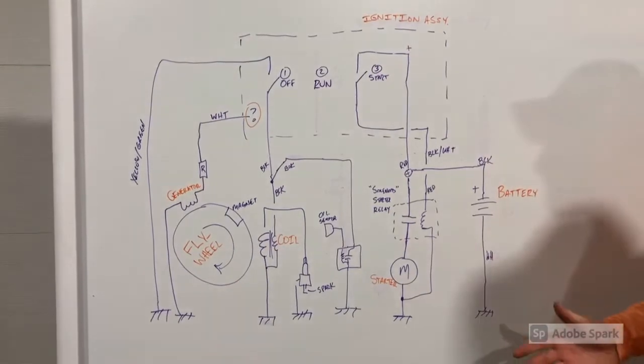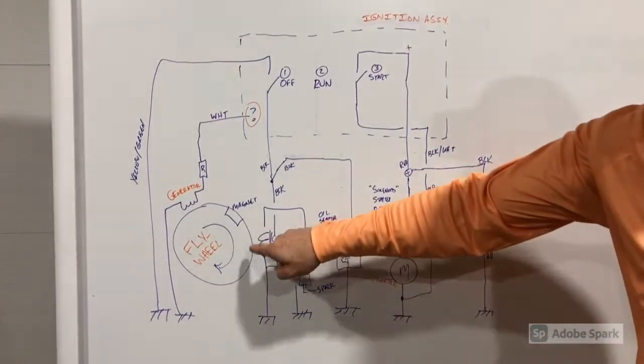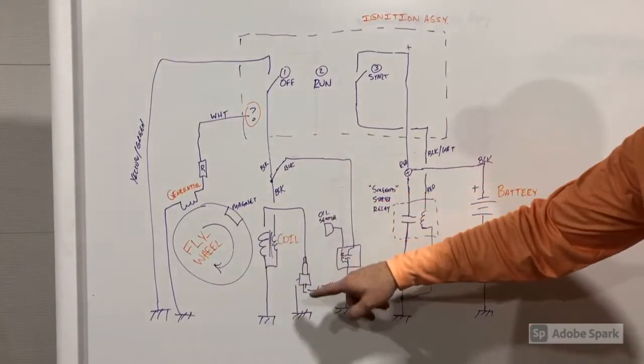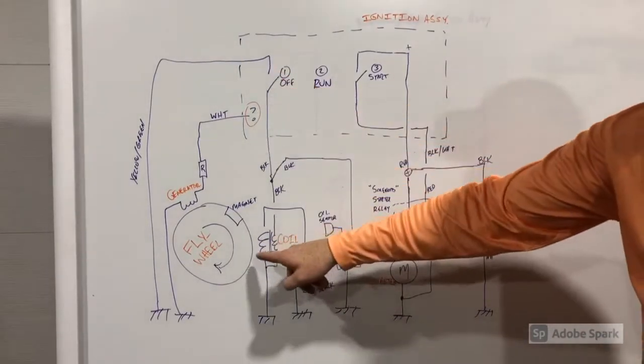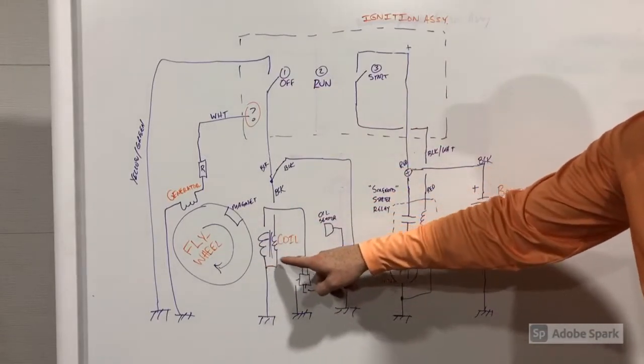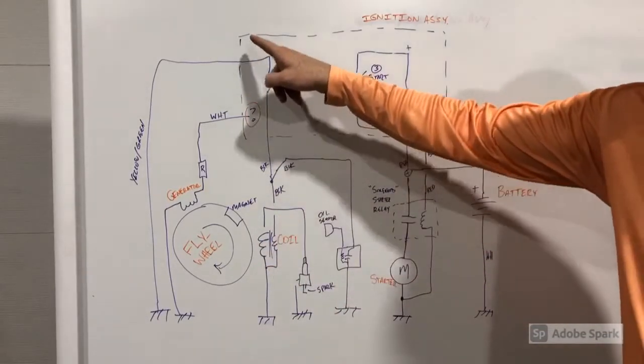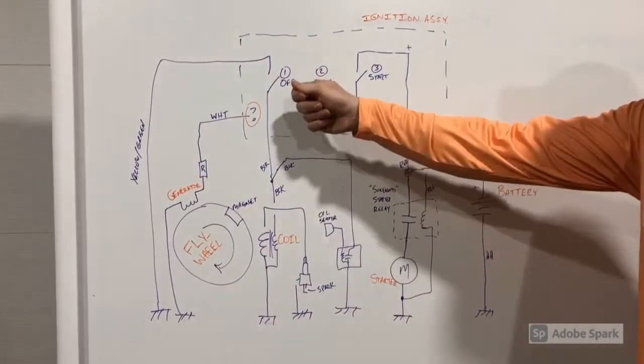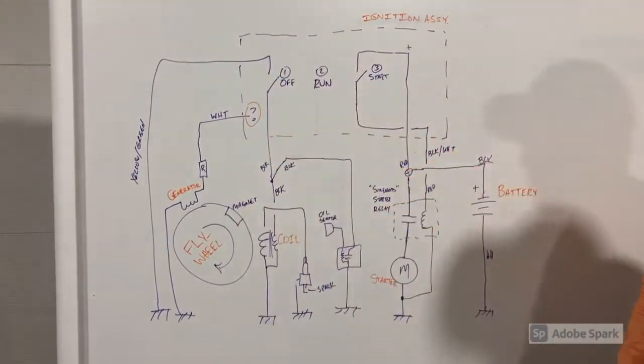So when you turn that key from the home or run position to off, you close a circuit, which allows power to bypass the coil and go straight to ground. And when you take power to ground, it stops the engine. So how does that stop the engine? Basically, while this flywheel is generating power through the coil, which keeps this spark going, when you close this circuit and that flywheel is trying to give power to the spark plug, it actually bypasses that circuit and runs all the way to ground.